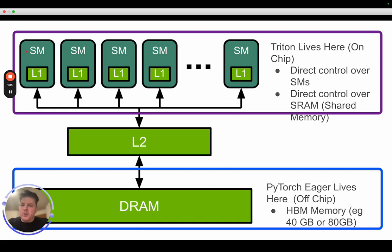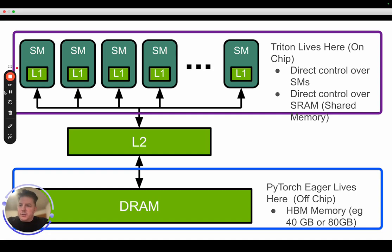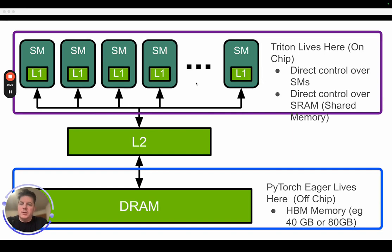The actual processing work is happening here in the SMs, or streaming multiprocessors. On an A100, there are 108 of them — this is where the actual work is done. It's a combination of the streaming multiprocessor and its compute cores, as well as the L1, which is both the data cache but more importantly a SRAM shared memory shared by all threads operating within the streaming multiprocessor. Triton basically lives here and gives you direct control over these SMs and their shared memory.